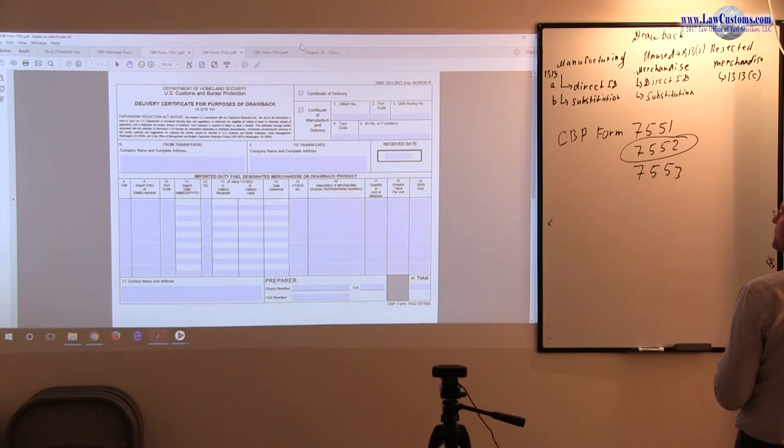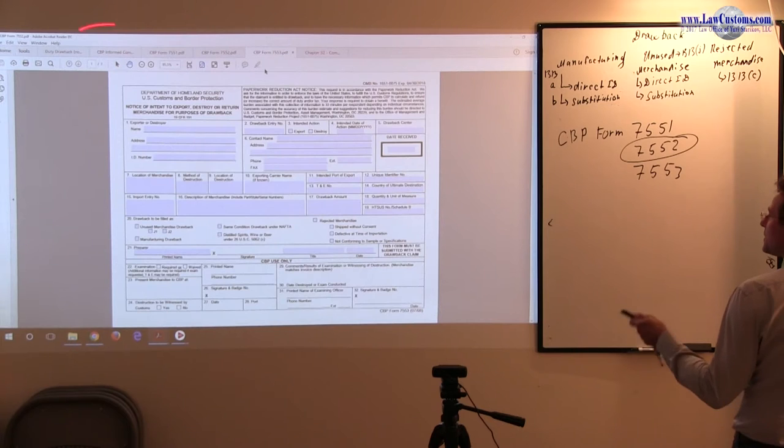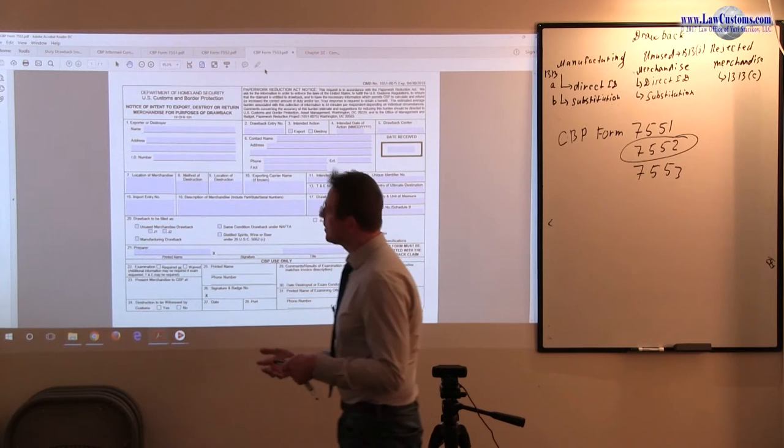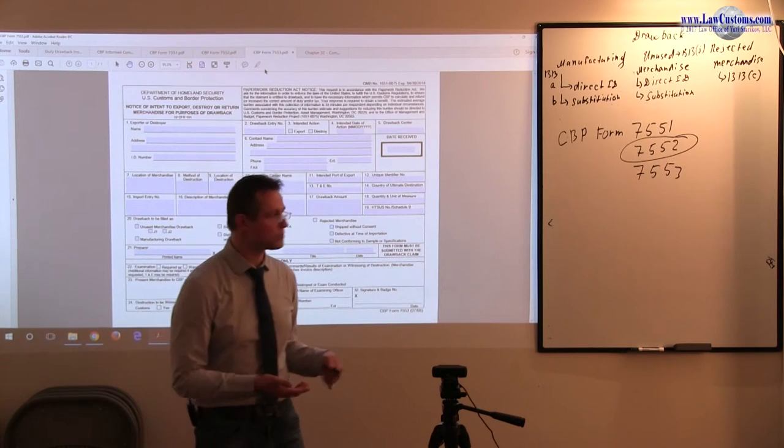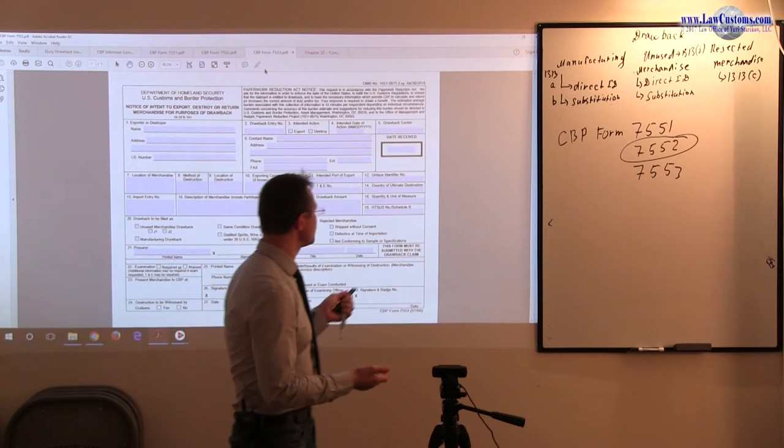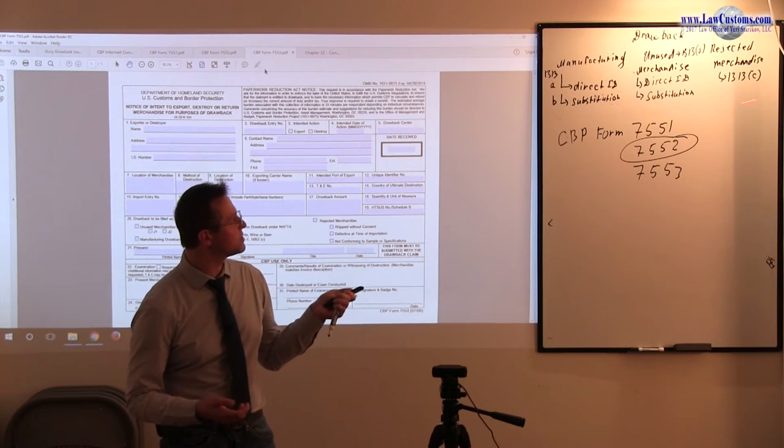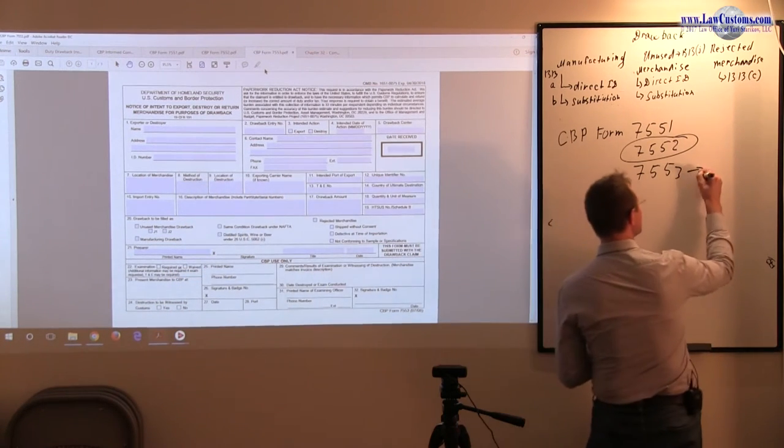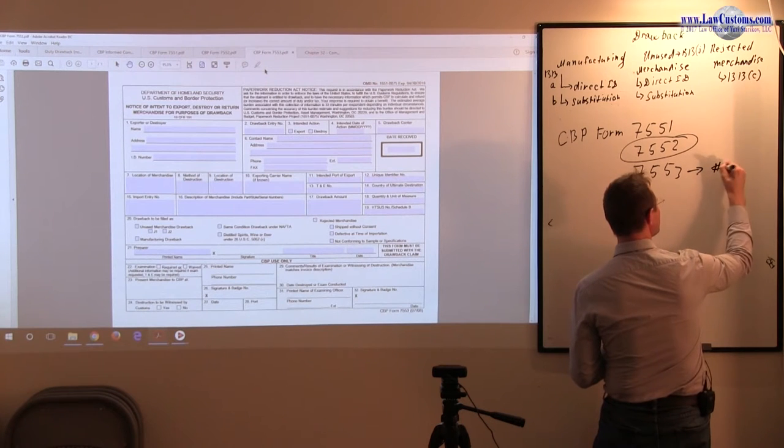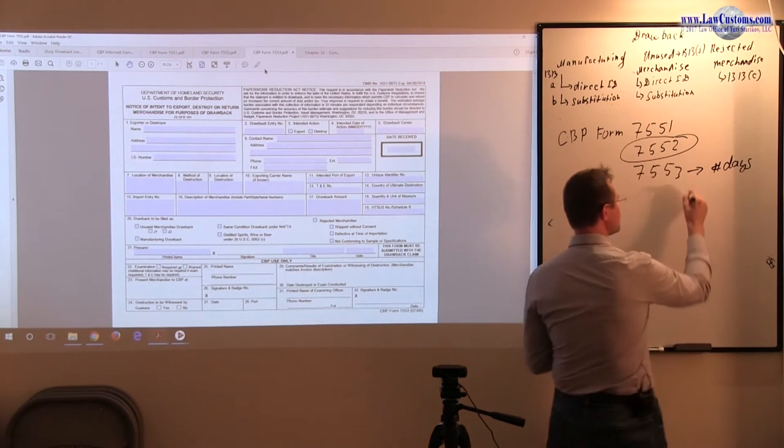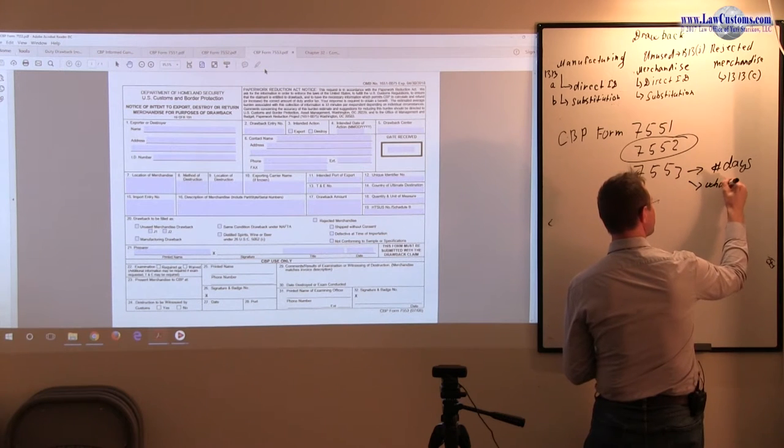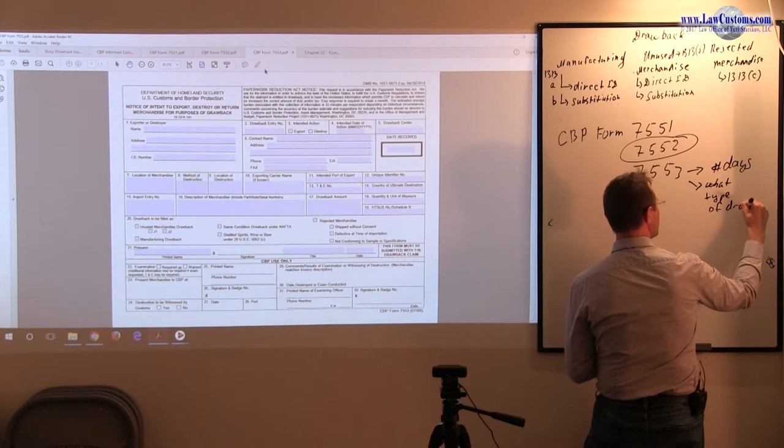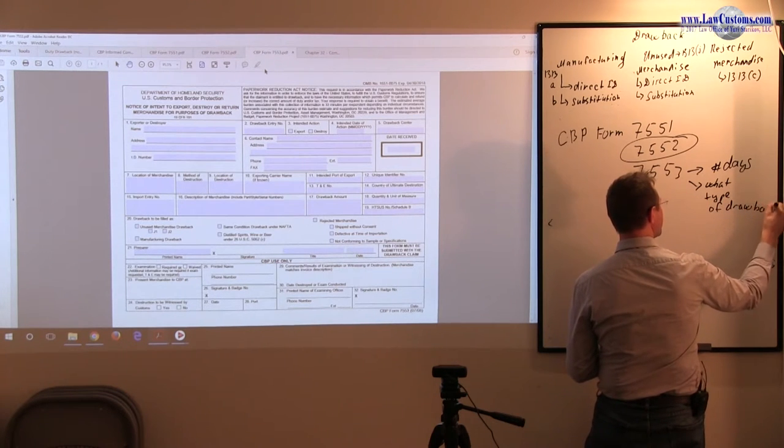7553 has to do with Notice of Intent to Export or Destroy. The Destruction is applicable to all types of drawback. The Notice of Export is applicable to unused merchandise and rejected, but not manufacturing. And the key thing to remember here is the number of days and to what type of drawback it is applicable.